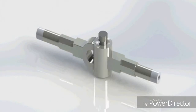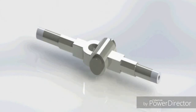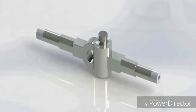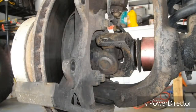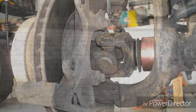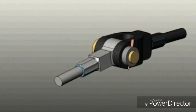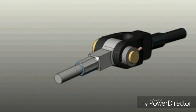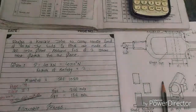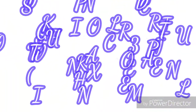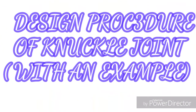The knuckle joint is mainly used for joining rods which are under tensile stress where some relative motion between the rods is necessary — that is, flexibility is needed. Now we'll see the design procedure for the knuckle joint through an example.